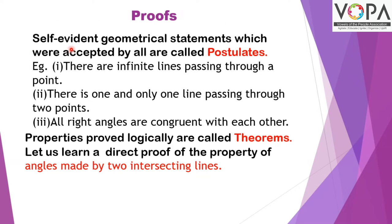Proofs. Self-evident geometrical statements which are accepted by all are called postulates. Examples: there are infinite lines passing through a point; there is one and only one line passing through two points; all right angles are congruent with each other. These are called postulates.